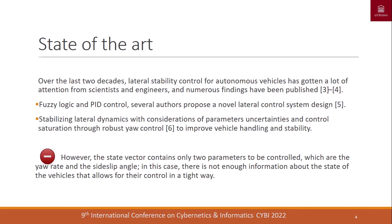State of the art: Autonomous vehicle control has received a lot of attention from scientists and engineers, and several findings have been published. Some authors used the combination of fuzzy logic and PID control; others stabilized lateral dynamics with consideration of parameter uncertainties and control saturation through robust yaw control to improve vehicle handling and stability. The issue with this method is that the state vector contains only two parameters — yaw rate and side-slip angle — providing insufficient information for tight control.